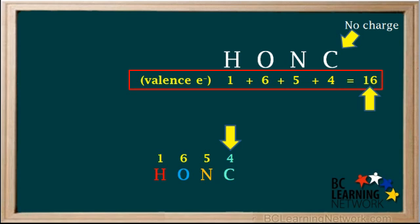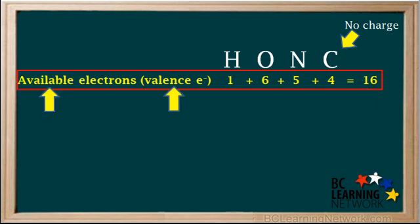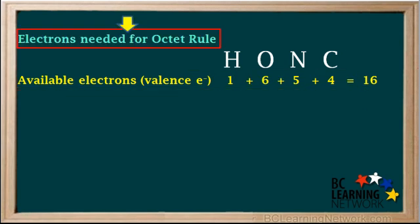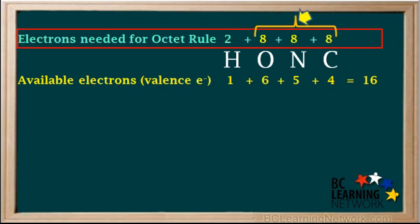To find the total number of valence electrons, we start with one from hydrogen, plus 6 from oxygen, plus 5 from nitrogen, plus 4 from carbon, which gives us a total of 16 valence electrons. Since this is a neutral molecule with a net charge of zero, the total number of available electrons is equal to 16. Next, we calculate the number of electrons needed by each atom to obey the octet rule.